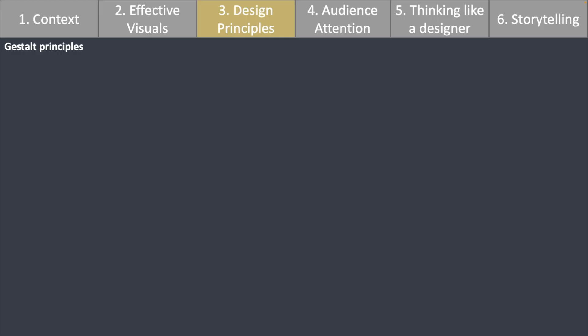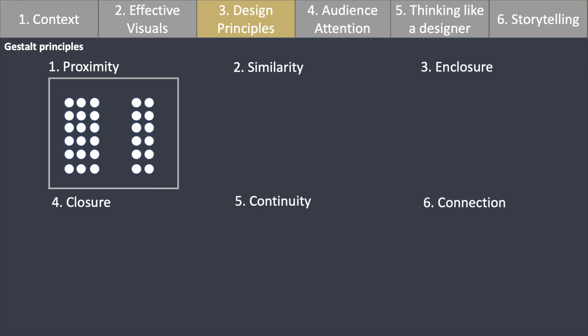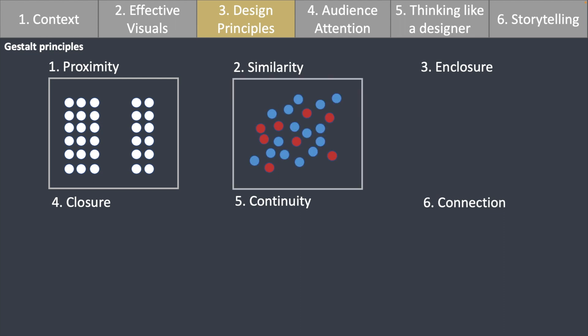The next takeaway comes from chapter 3: clutter. This chapter covers the principles of design, mainly around the Gestalt principles of visual perception. These are proximity, similarity, enclosure, closure, continuity, and connection. Proximity means that when we put objects close together, we tend to see them as a group. For similarity, we tend to identify things that are similar as a group — so in this case we identify red as one group and blue as one group.